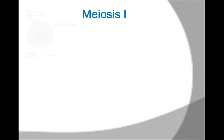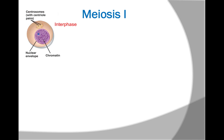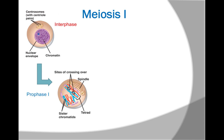Meiosis I. In interphase, the chromosomes duplicate making two identical sister chromatids. In prophase I — the most complex phase of meiosis, typically occupying over 90% of the time required for meiotic cell division — in a process called synapsis, homologous chromosomes, each composed of two sister chromatids, come together as pairs. The resulting structure consisting of four chromatids is called a tetrad. During synapsis, chromatids of homologous chromosomes exchange segments in a process called crossing over, which rearranges genetic information. Meanwhile, the nuclear envelope breaks into fragments and the mitotic spindle is forming.